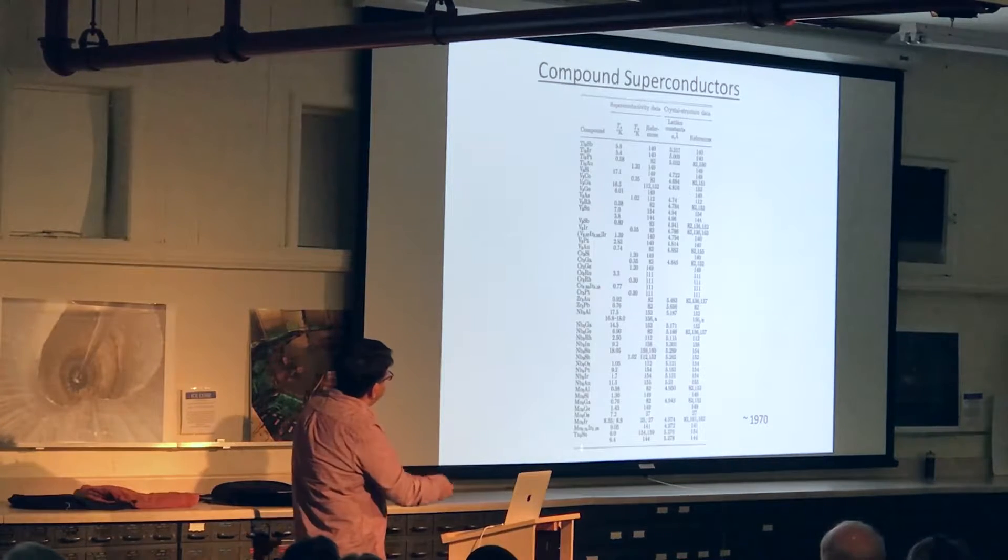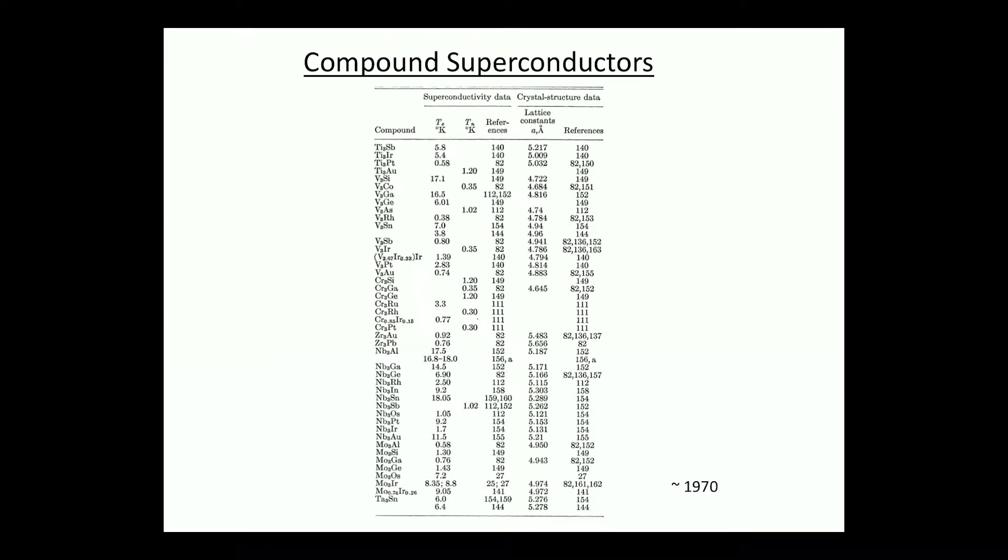And well here's a partial table. This is from about 1970. I pulled up a publication. And you can see that material scientists are a very industrious bunch. You have elements, these are only binaries, you can have ternaries, quaternaries, you can have lots of fun. And people found that the temperature at which they became superconducting varied all over the place. So you had 18, you had 0.74, all sorts of things.